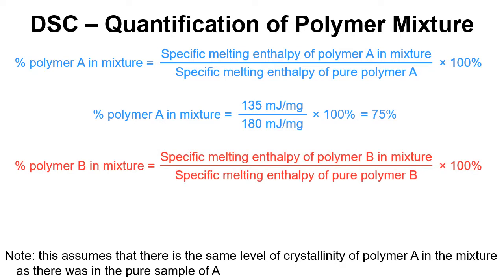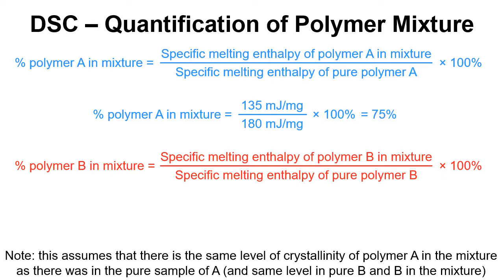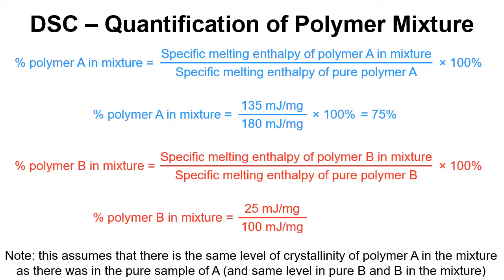We follow the same process for polymer B, again assuming the same level of crystallinity in the pure polymer as in the mixture. So 25 millijoules per milligram — the melting enthalpy for B in the mixture — divided by 100 millijoules per milligram for the pure polymer, times 100%, gives us 25% polymer B.